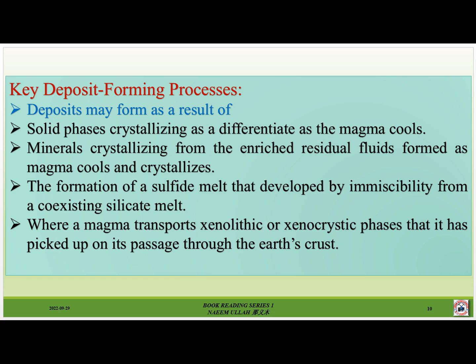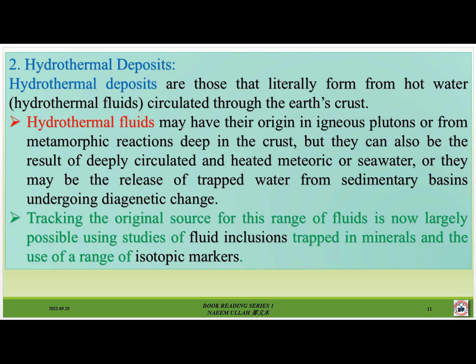Orthomagmatic deposits also include where a magma transports xenolithic or xenocrystic phases picked up on its passage through the earth's crust. Number two: hydrothermal deposits are those that literally form from hot water. Hydrothermal fluids circulated through the earth's crust may have their origin in igneous activity or from metamorphic reactions deep in the crust, but can also result from deeply circulated and heated meteoric or seawater, or from the release of trapped water from sedimentary basins undergoing diagenetic change. Tracking the original source for this range of fluids is now largely possible using studies of fluid inclusions trapped in minerals and the use of a range of isotopic markers.